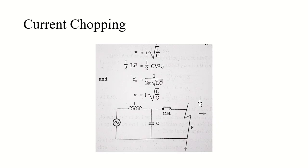Now there is a topic called current chopping. Current chopping is basically the phenomenon of current interruption before the natural current reaches zero value. This occurs mainly in air blast circuit breakers, because the air blast circuit breaker retains the same extinguishing power irrespective of the magnitude of the current to be interrupted. When interrupting low inductive current like the magnetizing current of a transformer, a rapid deionizing effect causes the current to fall to zero before the natural current zero — this phenomenon is called current chopping.